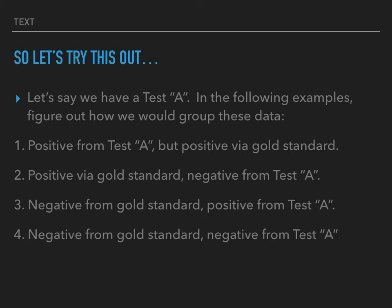Example three: negative from gold standard, positive from Test A. Negative and positive don't agree, so it is false. But it's a false what? It's a false positive, because it was positive from Test A — the test in question. Example four: negative from gold standard and negative from Test A. Two negatives means they're in agreement, so it's a true. But it's a true what? It's a true negative, because from Test A, the test in question, it's negative.